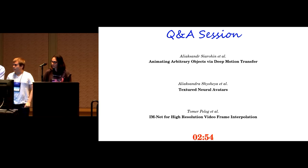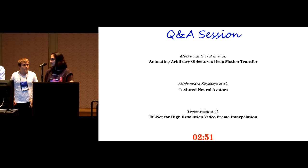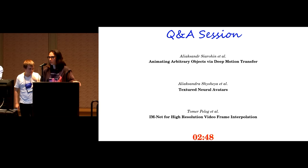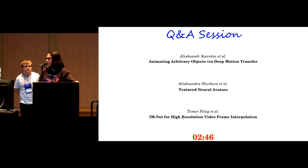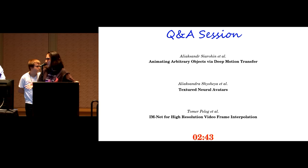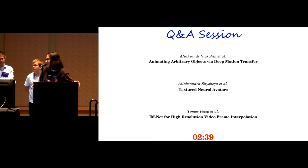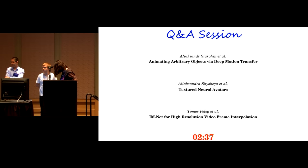A question for the textured neural avatars: you mentioned a perceptual loss — could you elaborate on what you meant? It was a simple VGG loss; we used a pre-trained network included in PyTorch, and it works quite well.